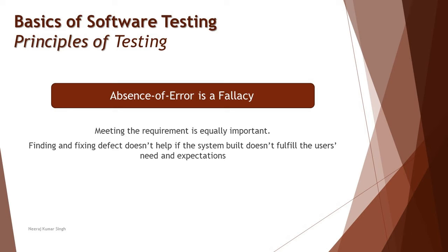Stepping into the last principle: absence of error is a fallacy. Absence of error is essentially also a failure. We understand that testing is about finding defects and removing them during the software development life cycle, but this principle contradicts that understanding by saying that finding and removing defects from the product could also be considered a failure.